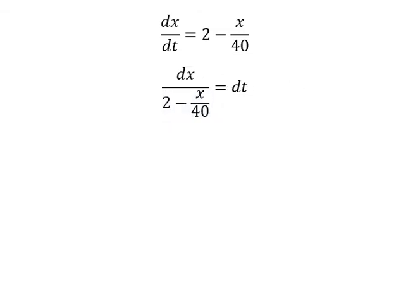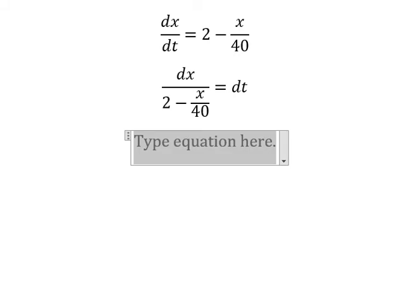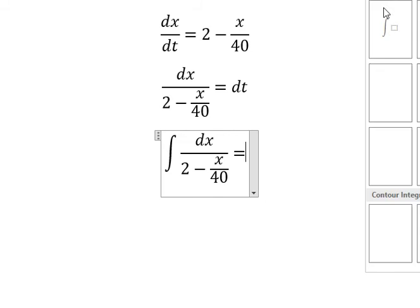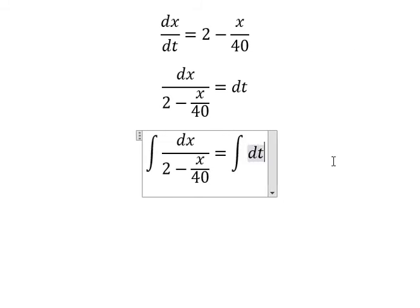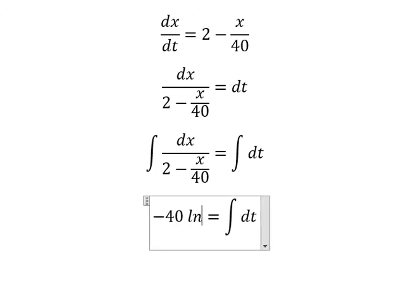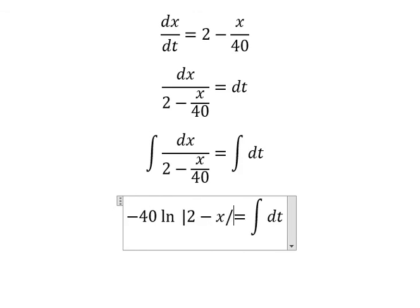Next I will put the integration for both sides. The integration of this one, we have negative 40 ln of the absolute value of 2 minus x over 40.